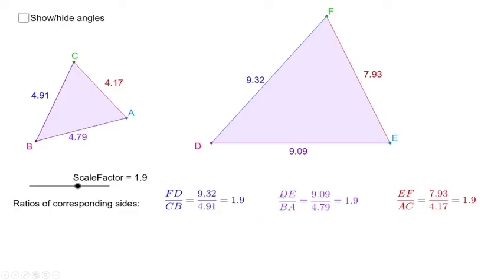Then the next side, DE divided by BA. DE is the length of the larger triangle, while BA is the length of the smaller triangle. When you divide them, you get 1.9. And then EF divided by AC. If you divide, you still get 1.9.